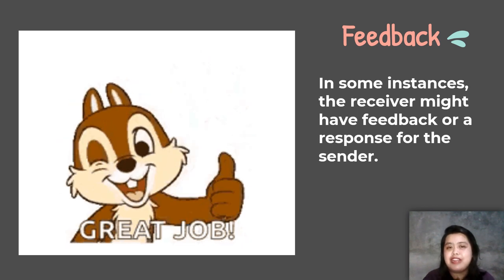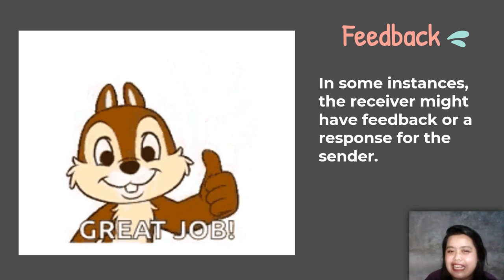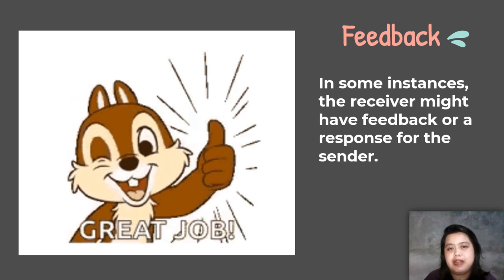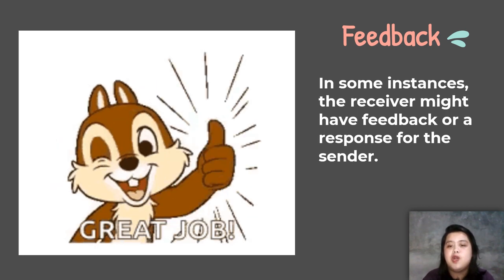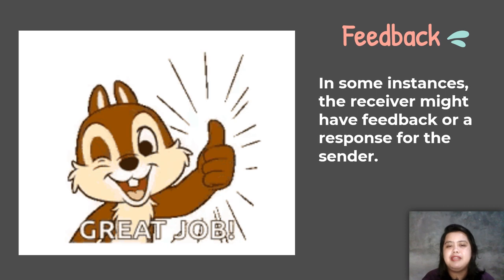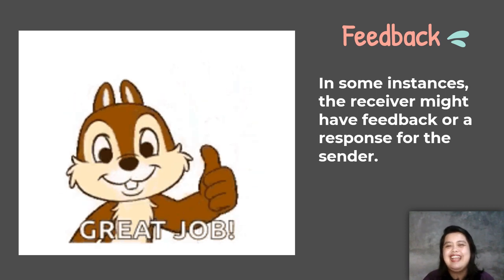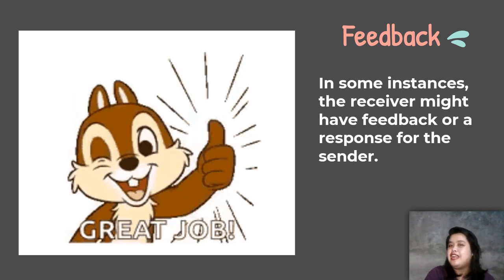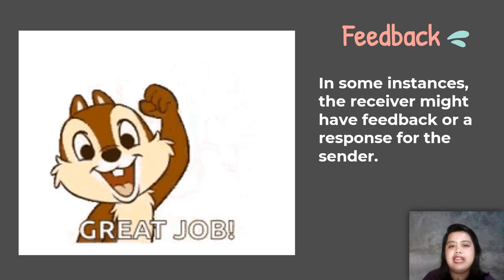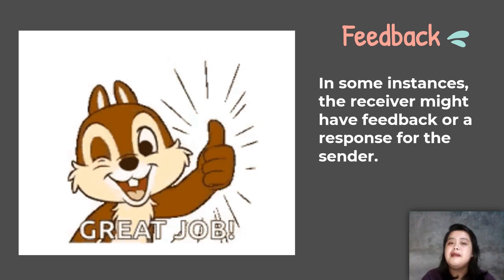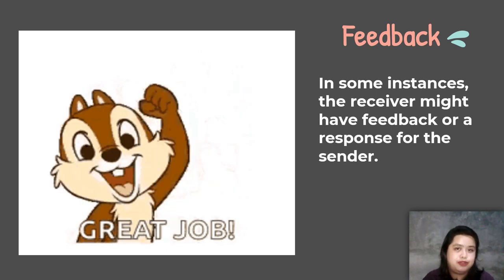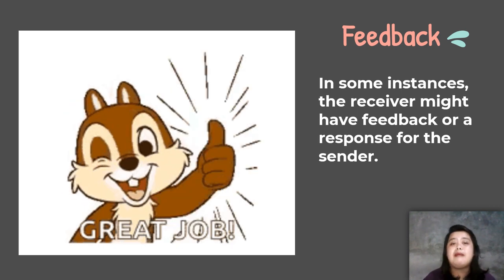After that, we have feedback. Not all communication processes have feedback — it doesn't always happen. In some instances, the receiver might have a response to the sender. For example, you tell a friend the answer to number one is B, and they reply 'Thank you.' Or a child says 'Mom, I got first honor,' and the mother responds 'Good job, very good!' When feedback occurs, this is where interaction begins, because they are now exchanging information with each other.